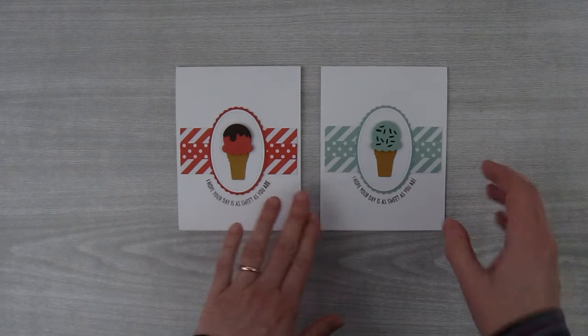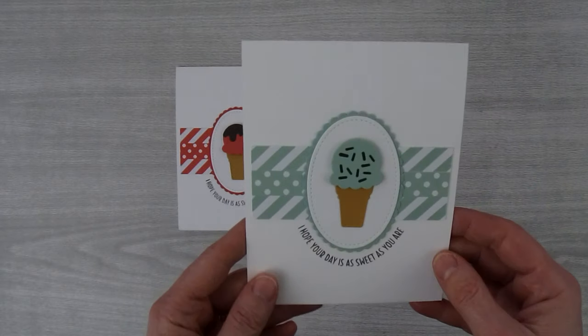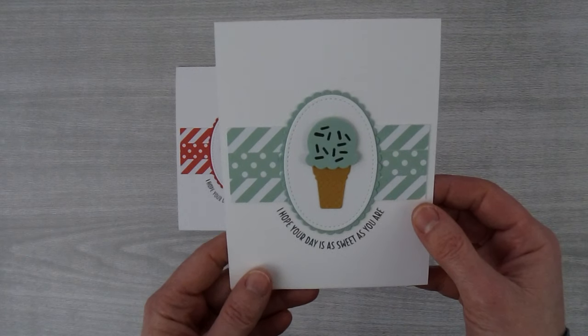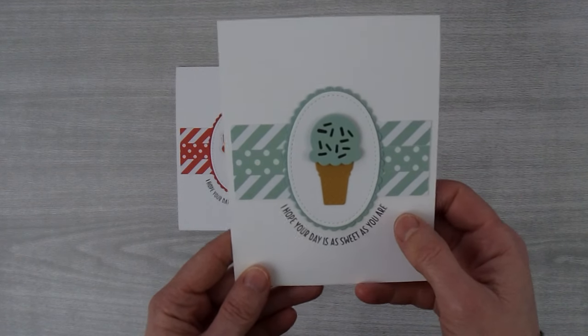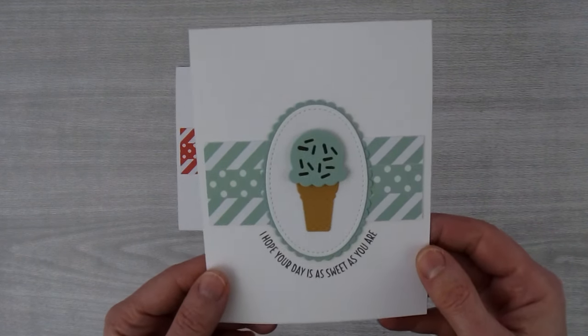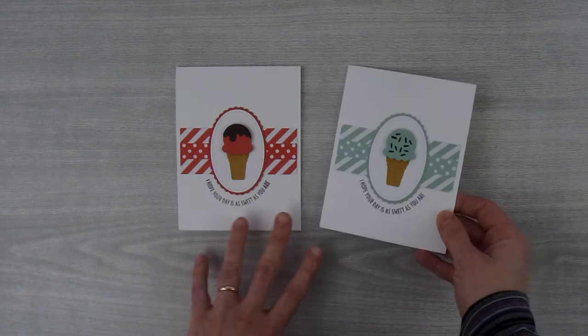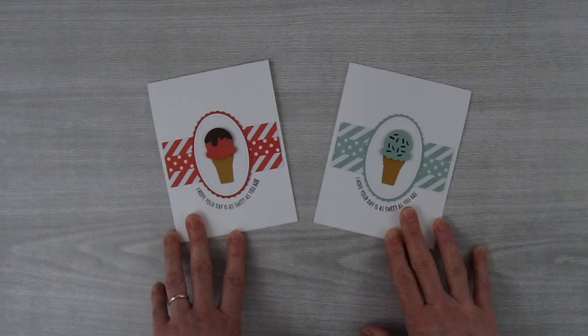I'm going to show you two tips today while making this card. One tip is how to use up some of your paper scraps and the other tip will be how to bend the photopolymer stamps so that they can be used around shapes like the oval in this card. So let's get started and I'll show you how to make these cards.